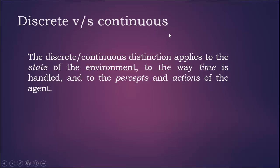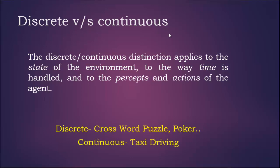The discrete and continuous distinction applies to the state of the environment, to the way time is handled, and to the percepts and actions of the agent. Examples of discrete environments are crossword puzzles and poker, and an example of a continuous environment is taxi driving.